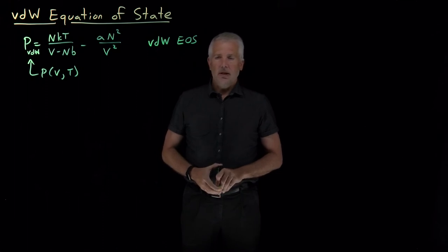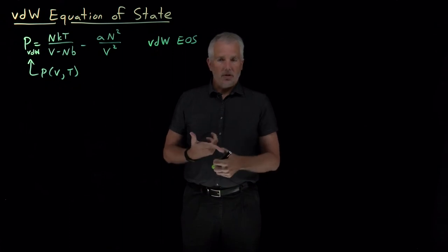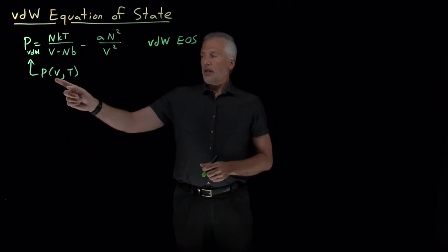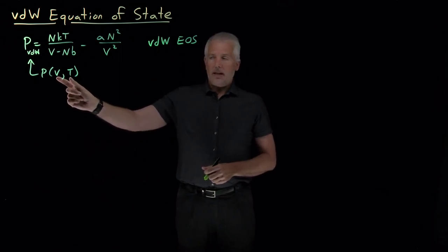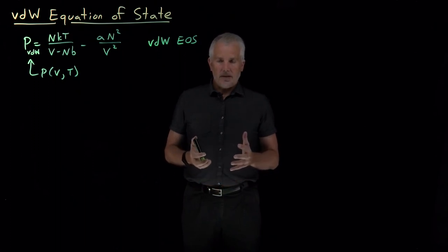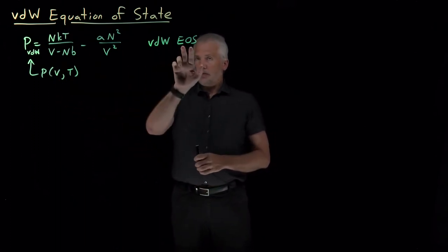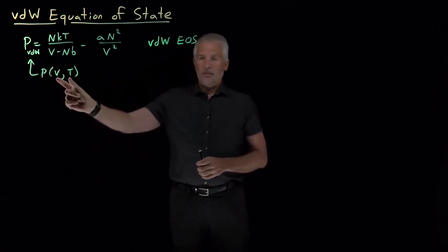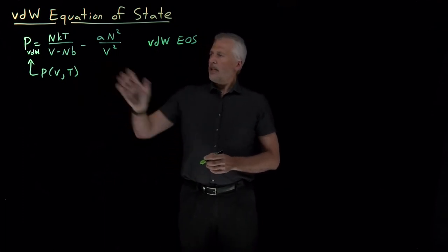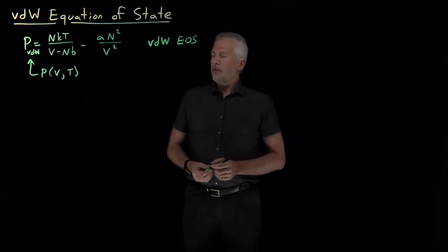There are other equations — I could also calculate, for example, the internal energy, and all I need to do that is the temperature as well. So knowing just a few thermodynamic properties like the volume and the temperature is enough to tell me the state of the system, and this equation of state tells me how to get the pressure from the state of the system. So this equation is useful and convenient.